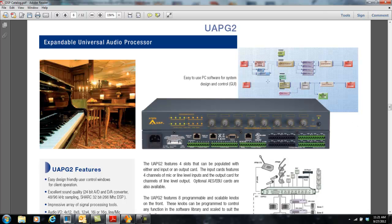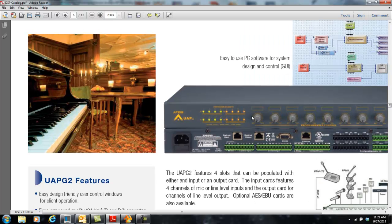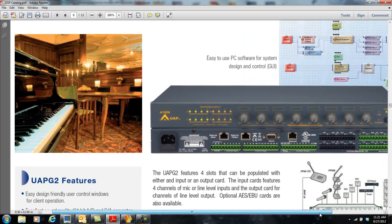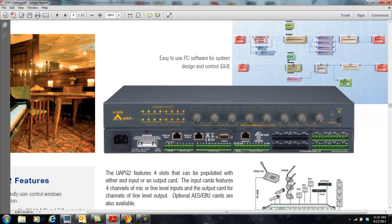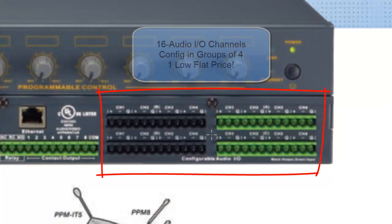Now let's look at some of the unique features on our UAP or Universal Audio Processor. Zooming in on the back of the unit, the first thing we see is the audio input/output configuration. We have 4 slots, and each one of these slots can be occupied by an audio input card. Each card is 4 channels, so this is configurable in 4-channel increments up to a maximum of 16 channels.